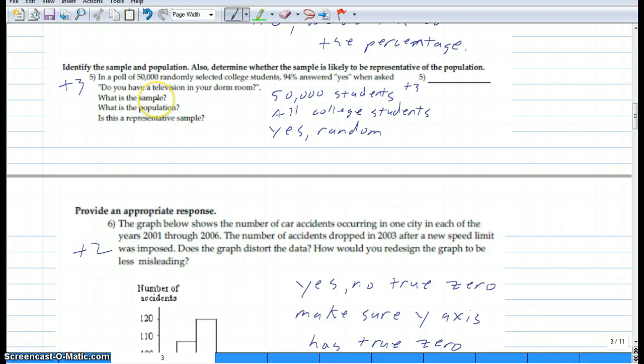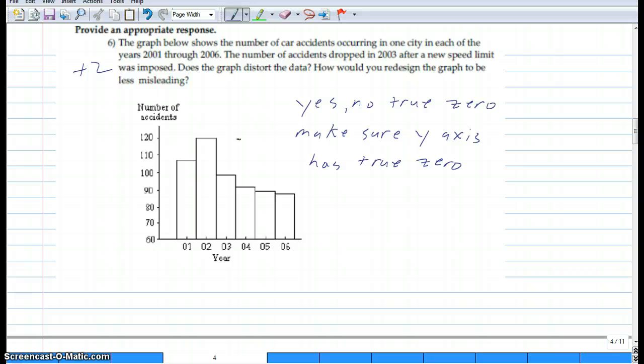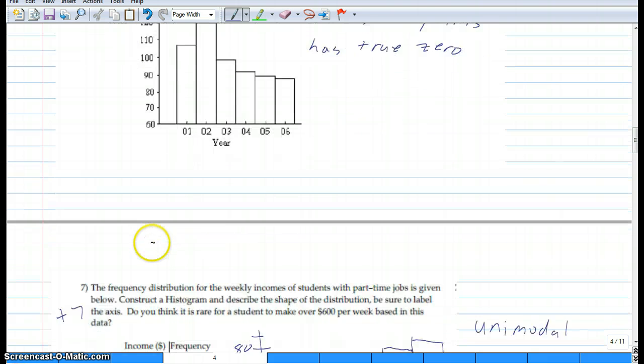Five: the sample is the 50,000 students, the population is all college students. Is it representative? Yes, because it was random and everybody had the same chance of being selected. Number six: to fix it, there's no true zero here. It starts at 60, so it could be misleading. The difference between these bar graphs would be lessened if there was a true zero. That's how you would fix it.